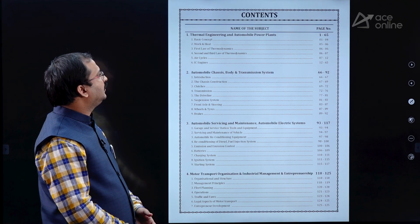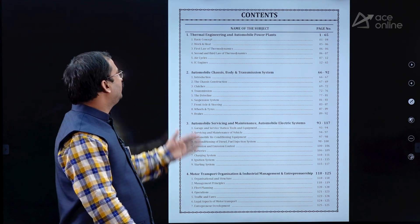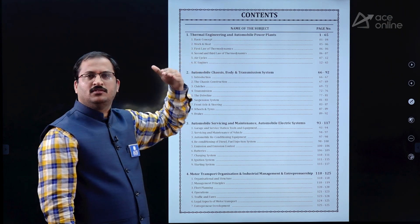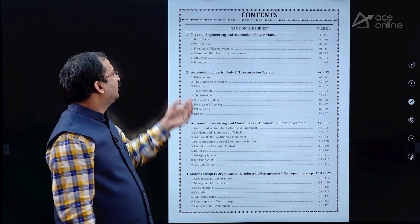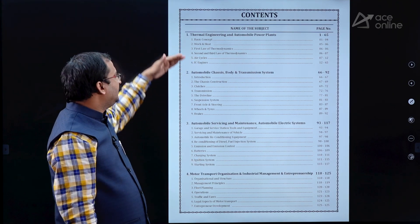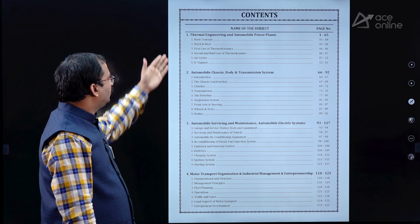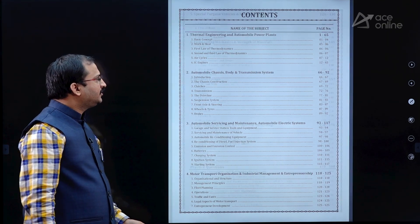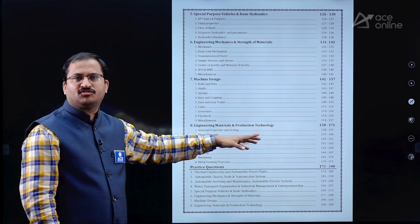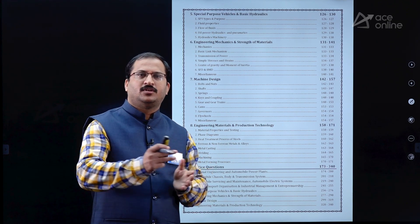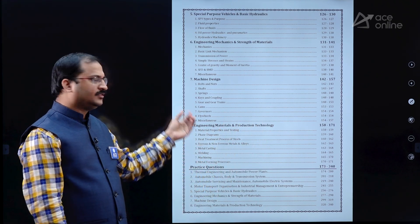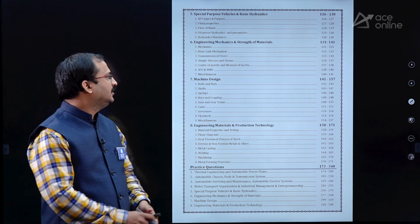Coming to the contents page, you can see that questions are separated subject-wise and topic-wise carefully. The first page lists 4 subjects and the second page lists the remaining 4 subjects, along with the practice questions page numbers, so students can go directly to the required page and study and practice those questions clearly.